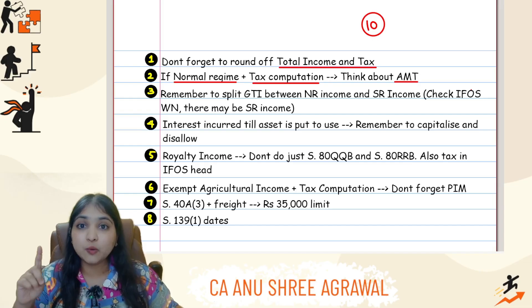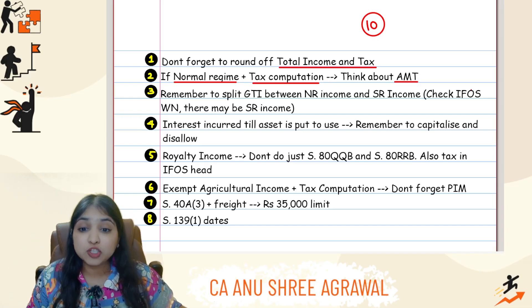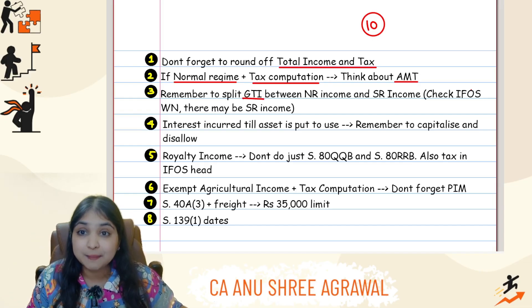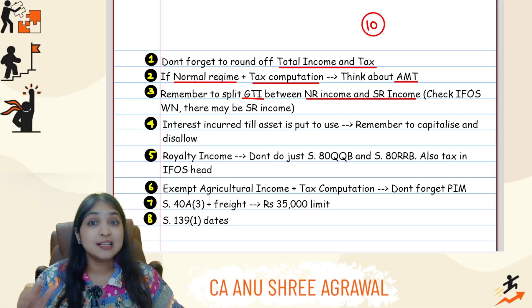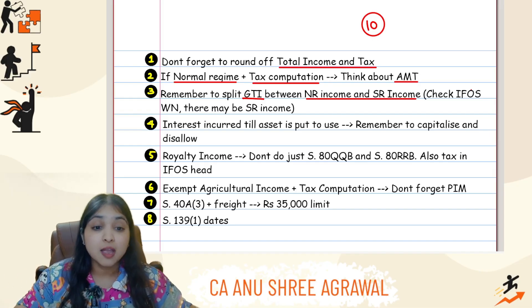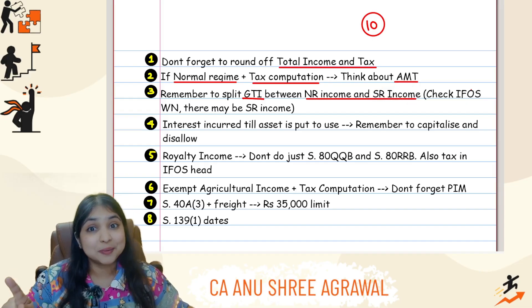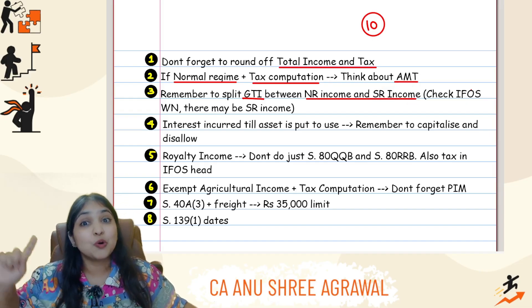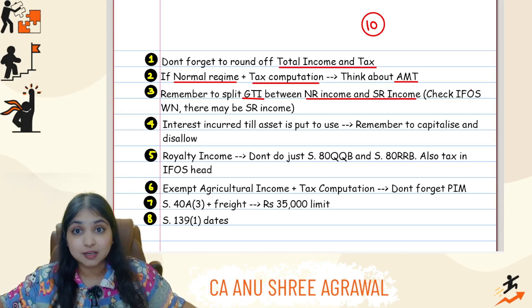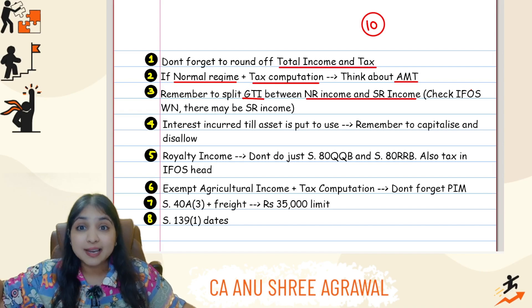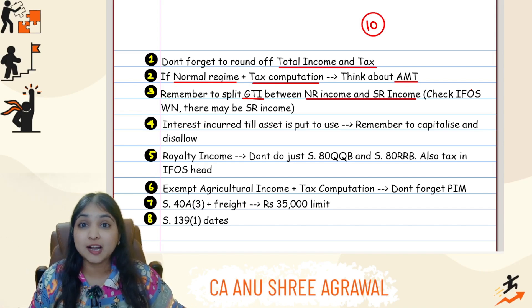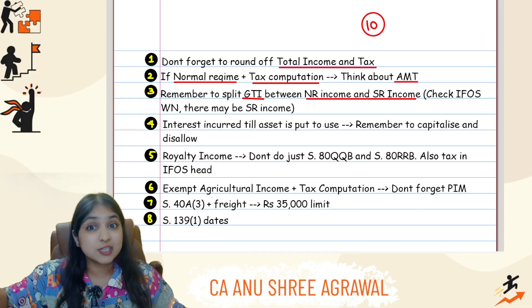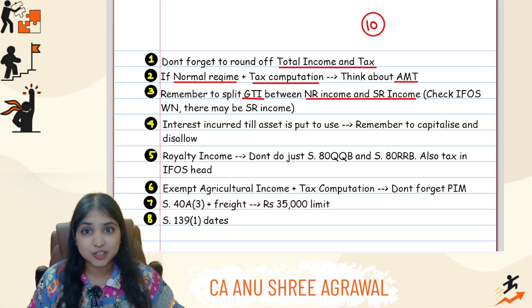Point number three: when you're computing total income, remember to split your GTI between normal rate income and special rate income, because Chapter 6A deductions cannot be enjoyed against special rate income. And special rate income is not only capital gains — don't forget to check your IFOS working note. If you have written any lottery income or any casual income there, that will also become special rate income.